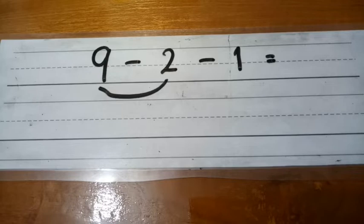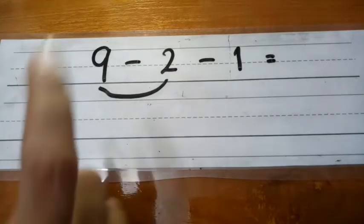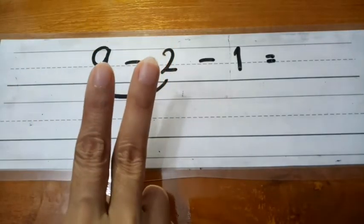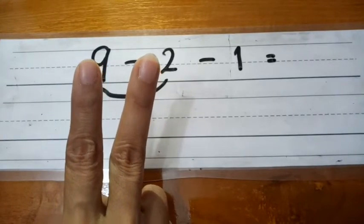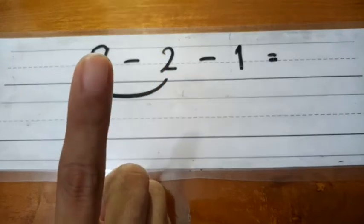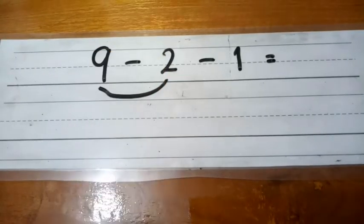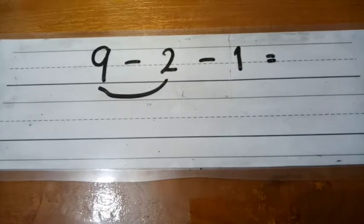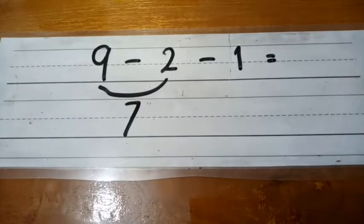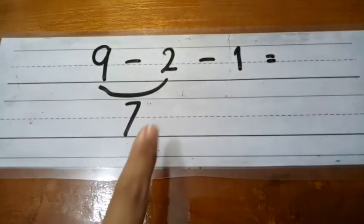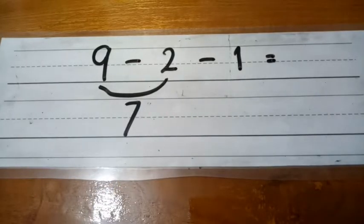Nine is in your mouth and two is on your finger. You have to count it backward. Before nine is eight, seven. So nine minus two is seven and after that you still have one more number.